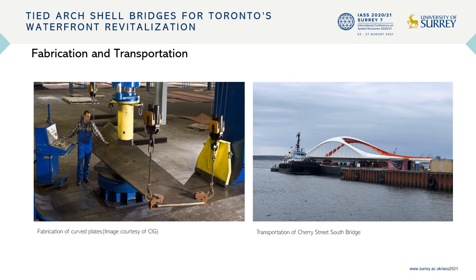Currently, there are not too many fabricators making double curved plates. We consulted CRG, a company in the Netherlands with a background in ship manufacturing, so they are already familiar with double curved plates. The bending process, as you see here on the left side, was done with a single press and the plate was held down on the sides. You can basically do it with one person — it's a fairly simple process, but still very accurate. The bridge was then fabricated and assembled in Halifax by Cherubini and shipped on a barge, as you see here on the right side, to Toronto to its final position.